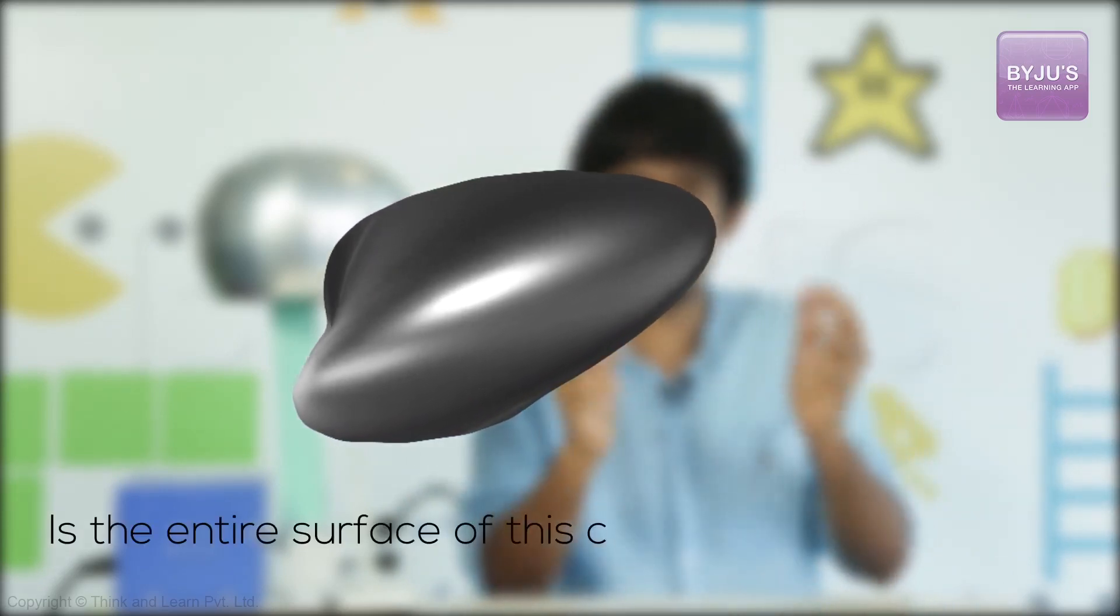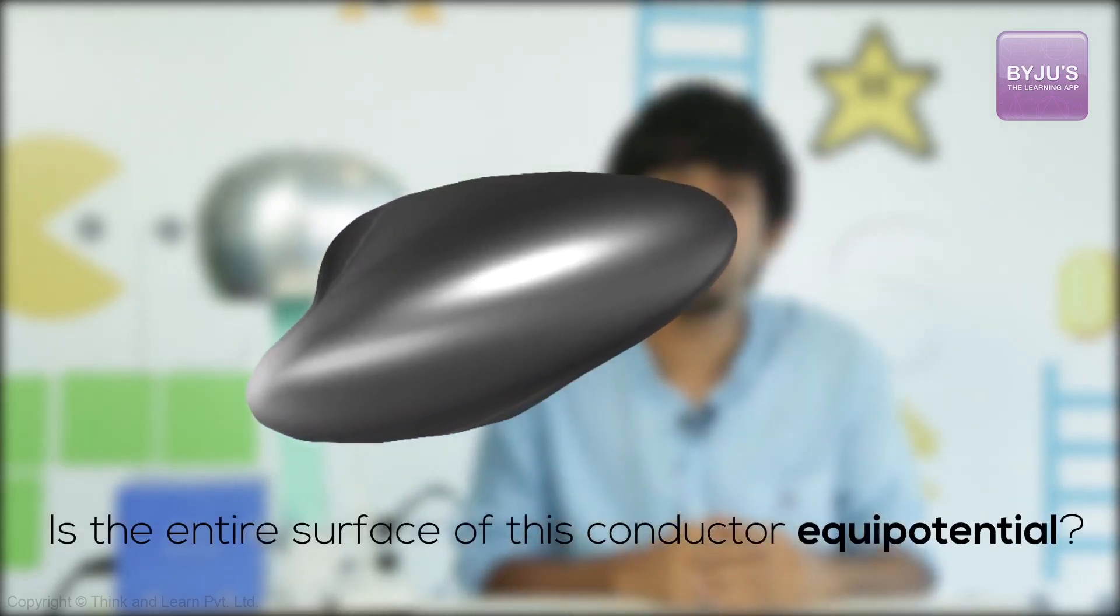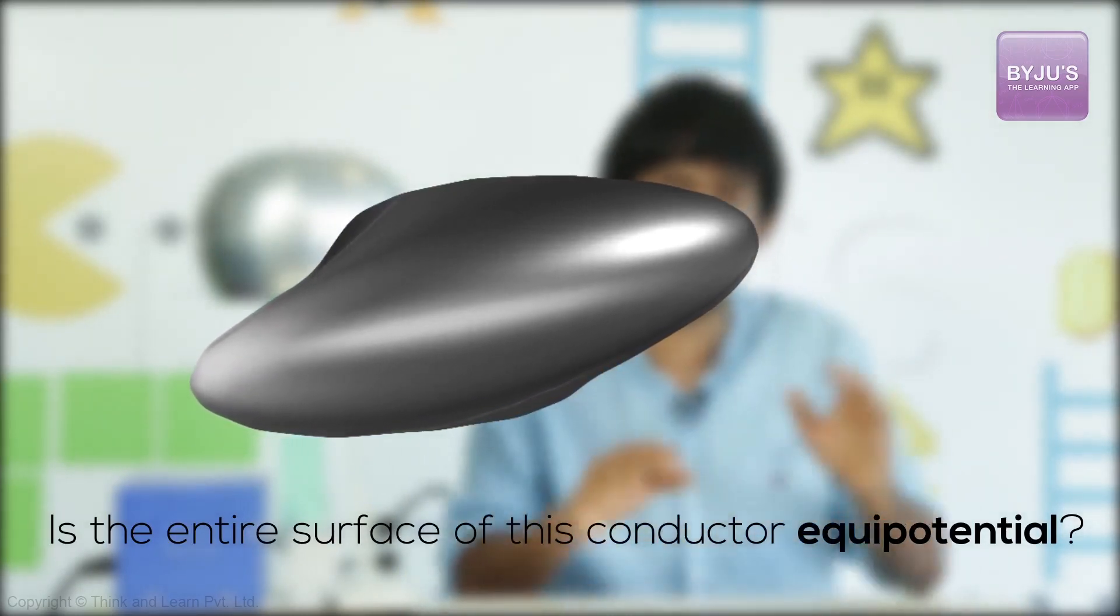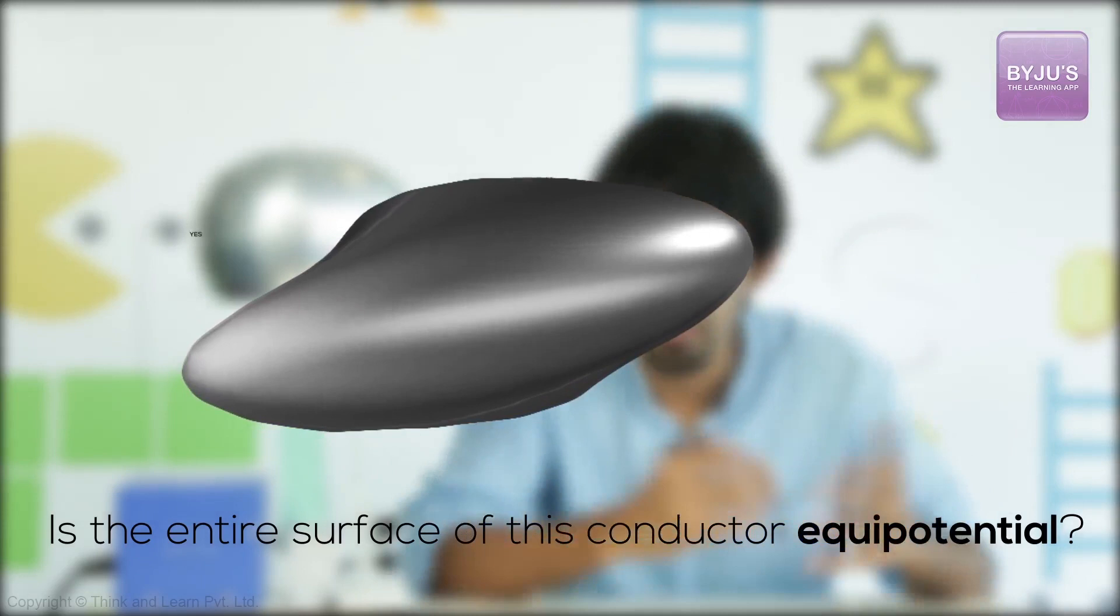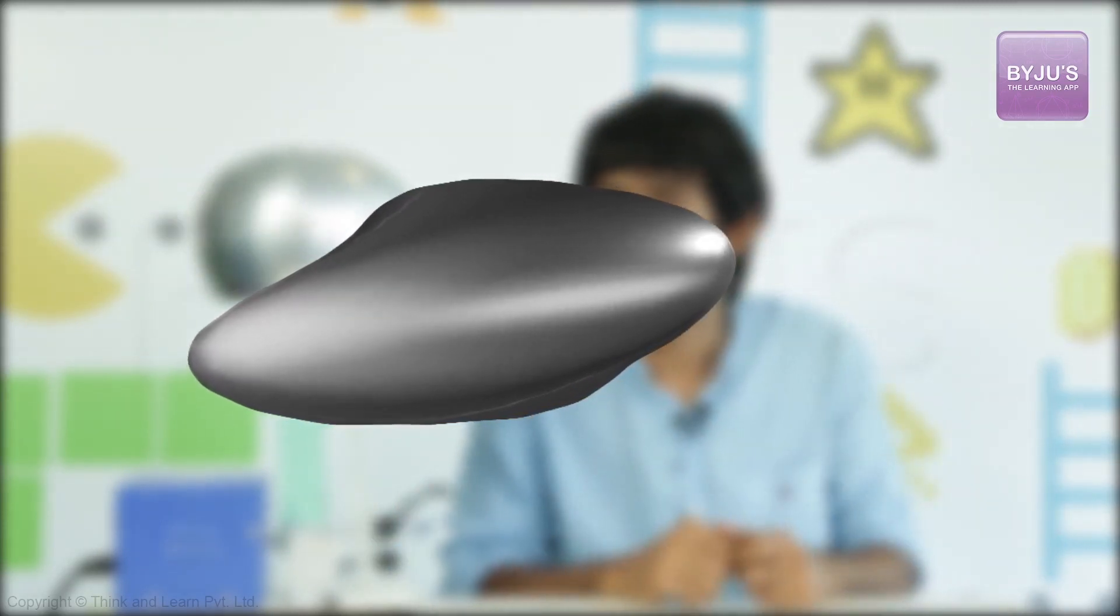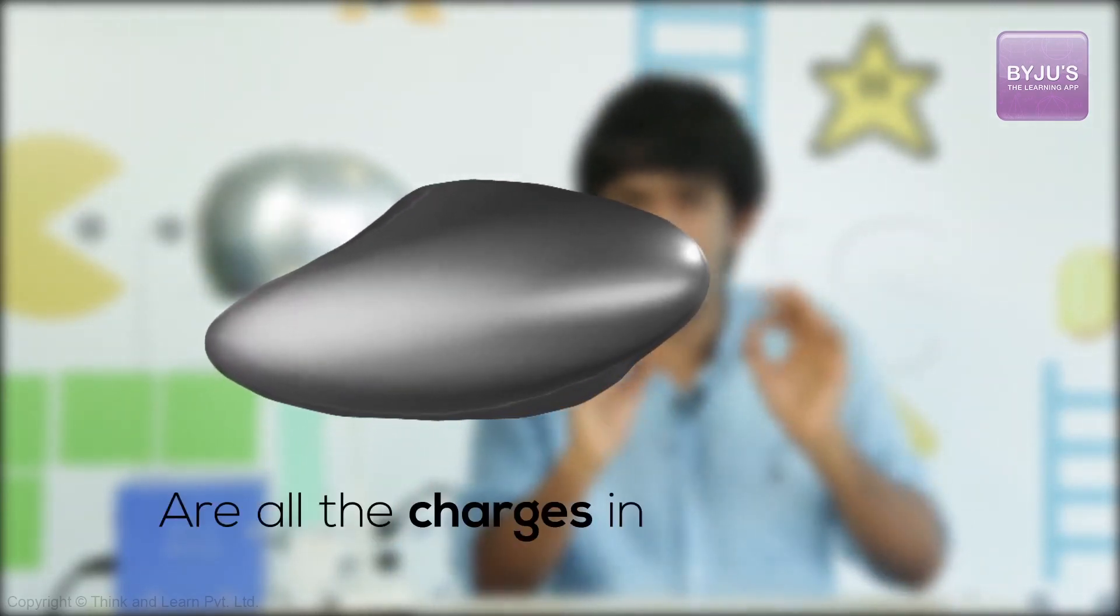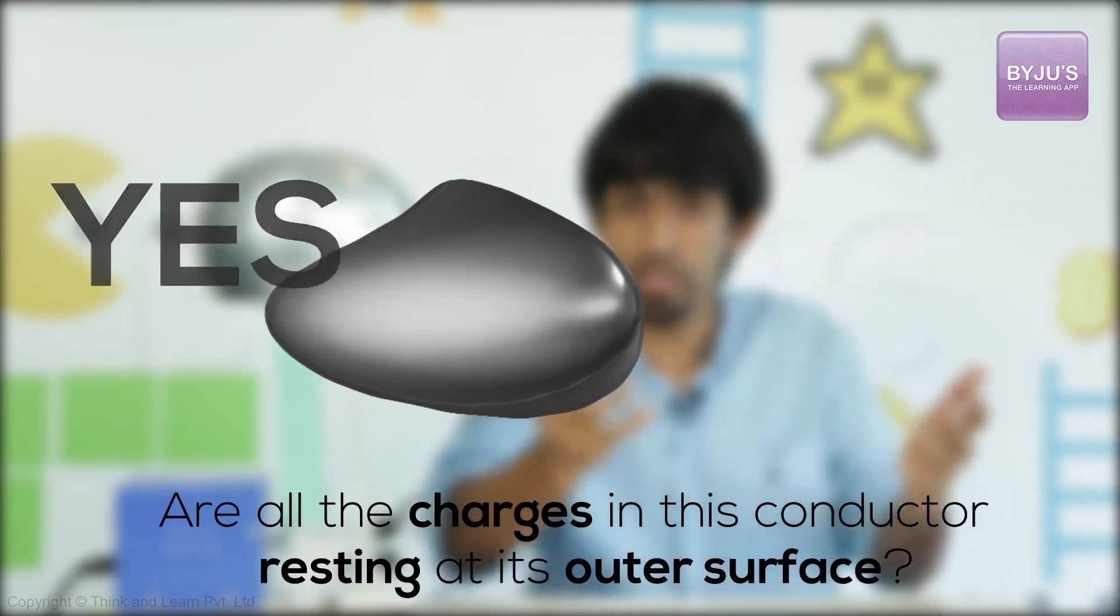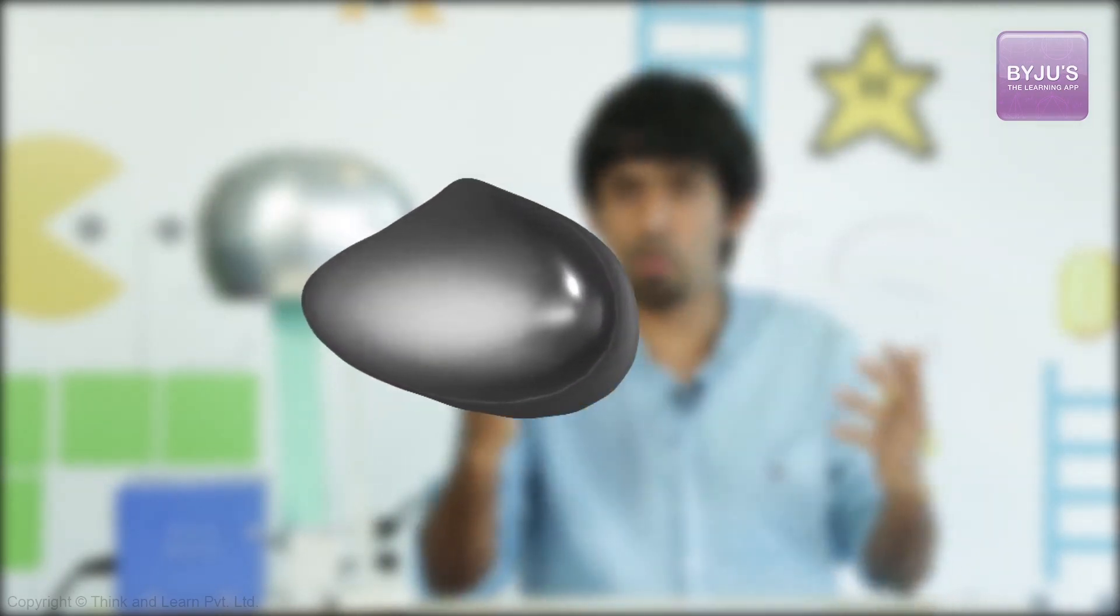And I ask the question, is the entire surface of this conductor equipotential? By that, I mean the potential difference between any two points in that conductor is zero. Is that true? Yes, it is. We proved it. Now, is all the charge on this conductor resting at its outer surface? Yes. We showed that using Gauss's law, long ago.